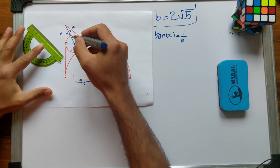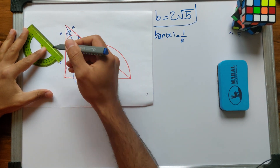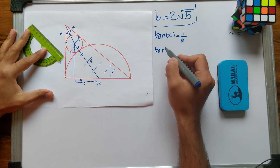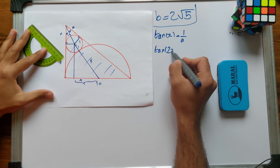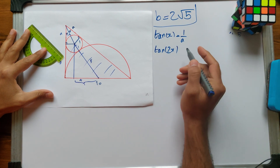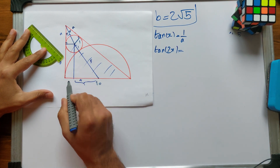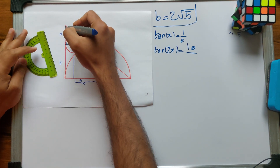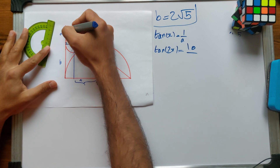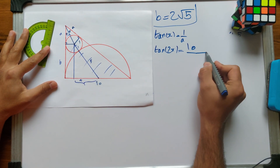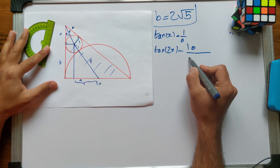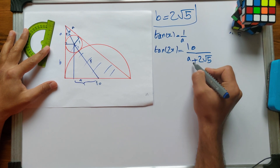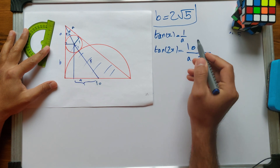In the bigger right angle triangle, the full angle at the vertex is 2x. The tangent of 2x equals the side opposite — the full diameter, which is 10 — over the adjacent side, which is A plus B, or A plus 2 square root of 5.